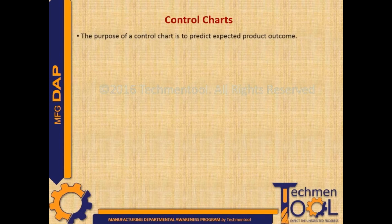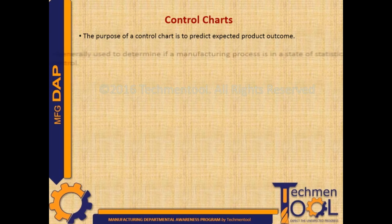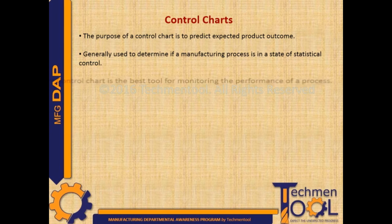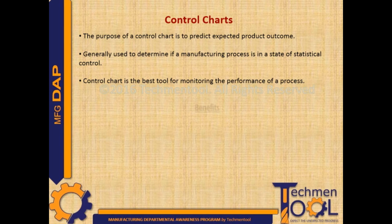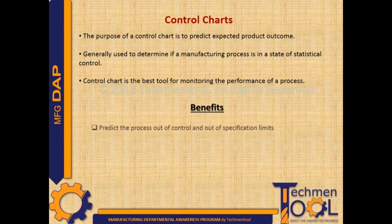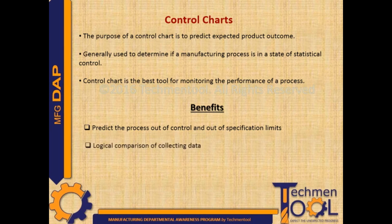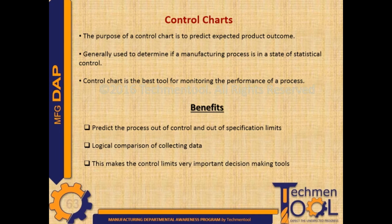The purpose of a control chart is to predict expected product outcome. It is generally used to determine if a manufacturing process is in a state of statistical control. A control chart is the best tool for monitoring the performance of a process. Benefits include predicting the process going out of control and out of specification limits, and providing logical comparison of collected data, making control limits very important decision-making tools.